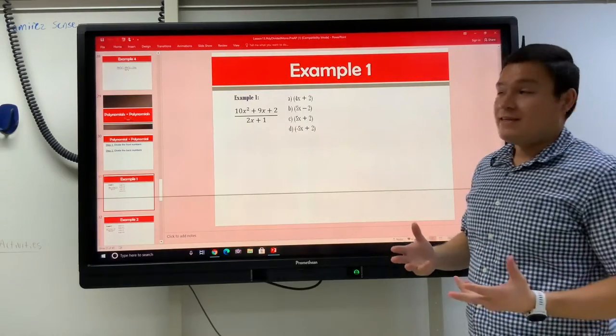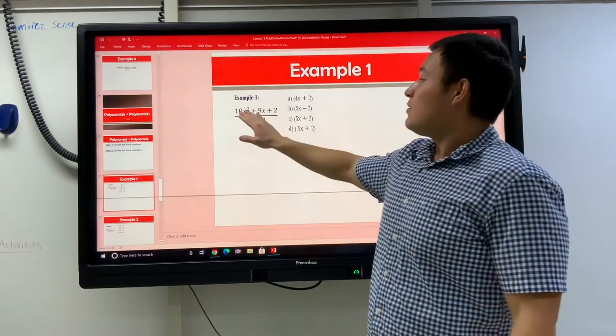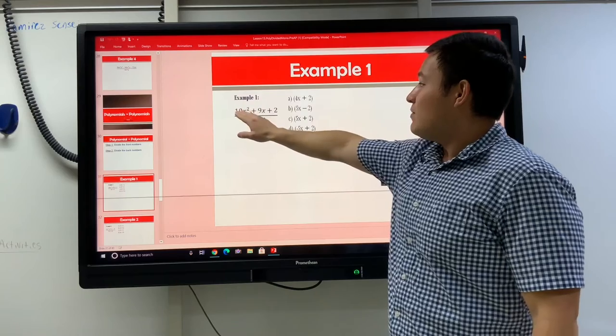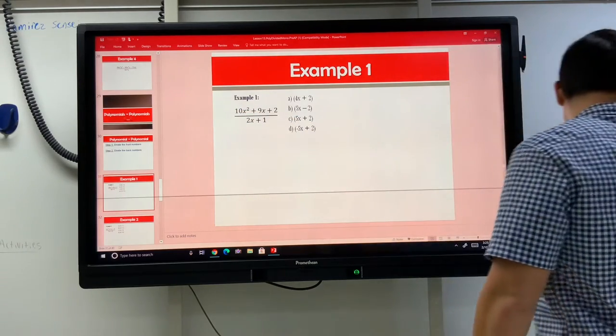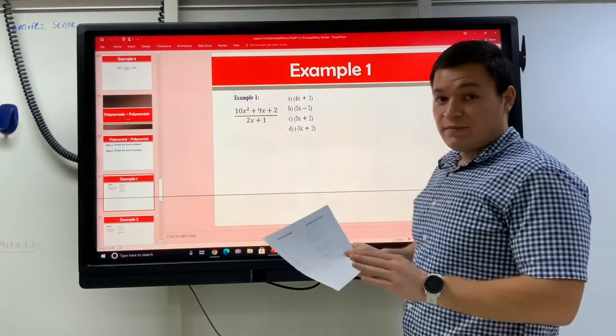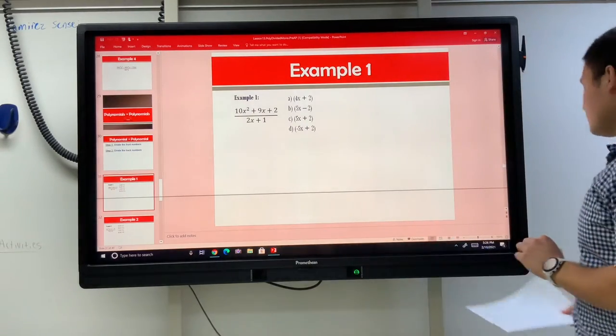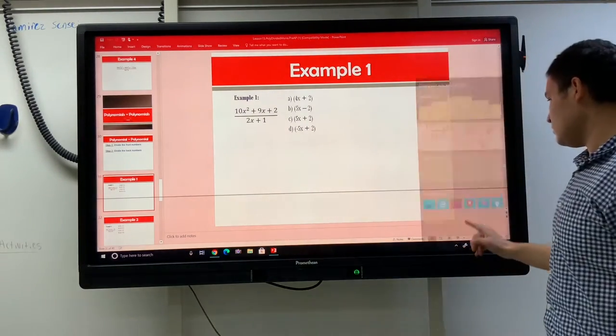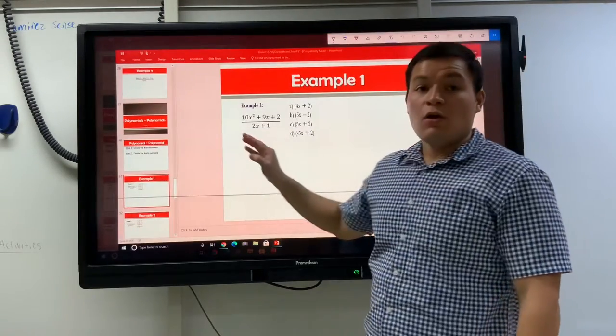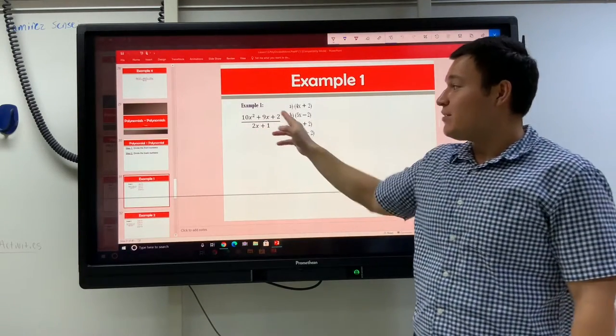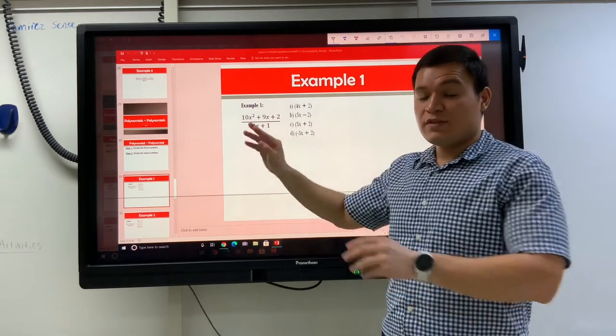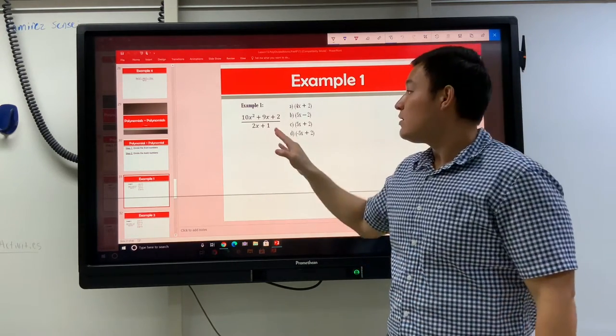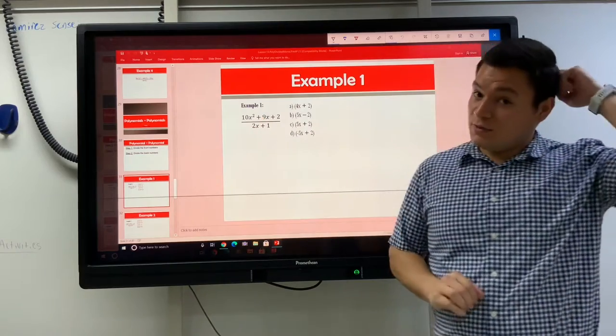Let's start off by doing it with an example. We have 10x squared plus 9x plus 2 over 2x plus 1. This does match what you have in your polynomial book. When you have multiple things on the top of the fraction and multiple things on the bottom of the fraction, we normally don't split the fraction apart. So, what we do instead is we do long division.